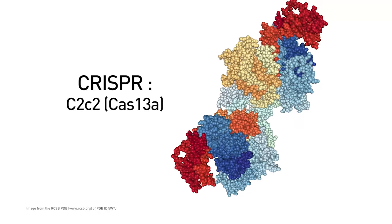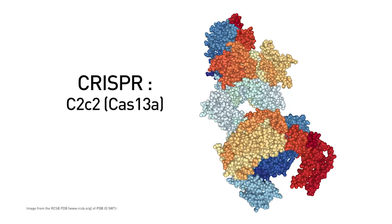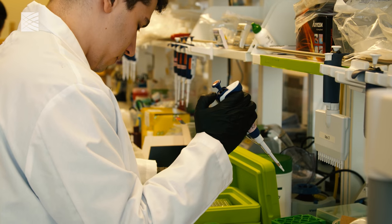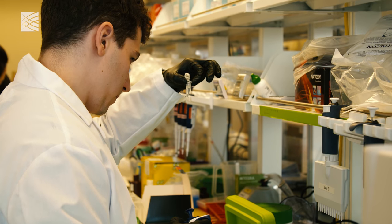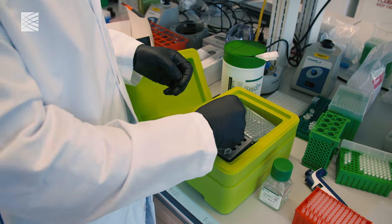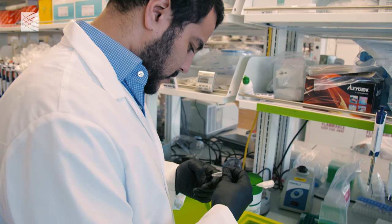C2C2, also known as Cas13A, is a CRISPR protein. It's kind of like Cas9, but quite different in the sense that it targets RNA instead of DNA. When we first characterized the enzyme biochemically, we saw that it would cut its RNA based on the sequence of the CRISPR RNA, so you could reprogram it. But we also saw that when it recognized its target, it was chewing up other RNAs that were around. So we gave it a name: the collateral effect of the enzyme.